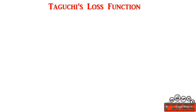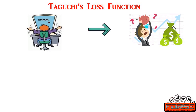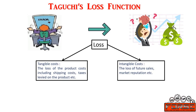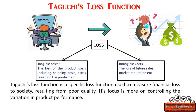Professor Genichi Taguchi said that cost is more important than quality, but quality is the best way to reduce cost. Taguchi's loss function states that if any product or service does not perform as per the targeted performance level, fulfilling the customer's needs and expectations, the products or services create loss to society. This loss can be seen in two major forms: the loss of product costs including shipping costs and taxes, termed as tangible costs; and the loss of future sales and market reputation, termed as intangible costs. Taguchi's loss function is a specific loss function used to measure financial loss to society resulting from poor quality, with a focus on controlling the variation in product performance. The main objective of a quality improvement program should be to minimize product performance deviation from its target value.